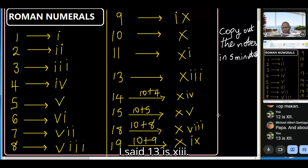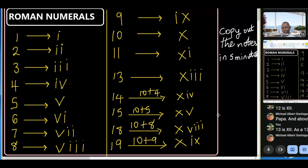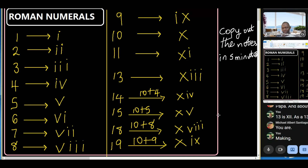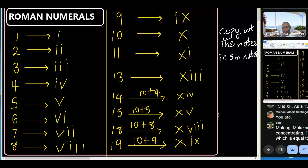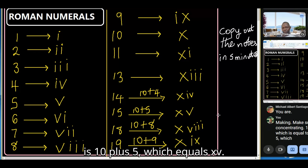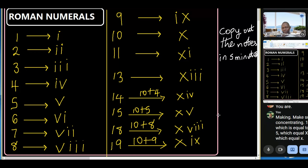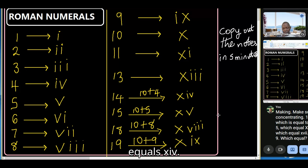Thirteen is XIII. Make sure you're concentrating. Fourteen is 10 plus 4, which equals XIV. Fifteen is 10 plus 5, which equals XV. Eighteen is 10 plus 8, which equals XVIII. Nineteen is 10 plus 9, which equals XIX.